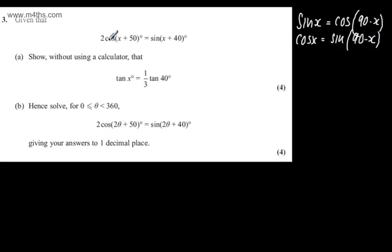I'm going to use this for my expression for cosine here. So cos(x + 50) could be written as sin(90 minus that), which gives me sin(40 - x). I'm going to substitute this in.